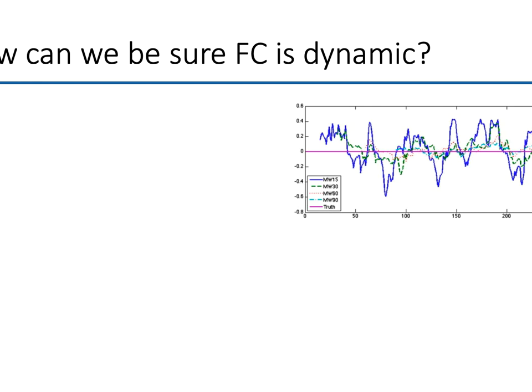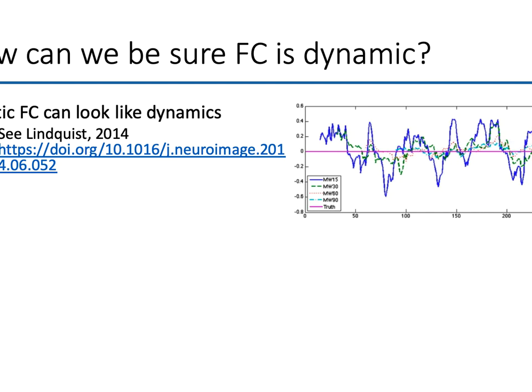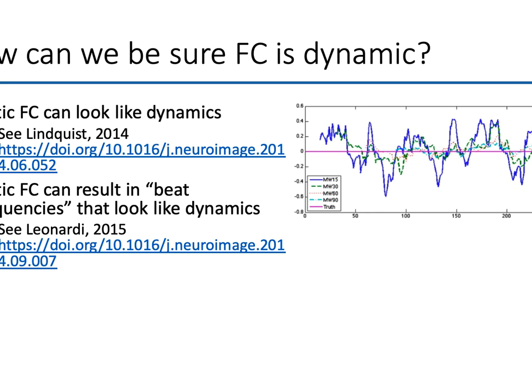Another big controversy: how can we be sure that functional connectivity is dynamic? How do we know it's not just a static thing that looks dynamic because of sampling? This warning was raised by Martin Lindquist, among others. He noted that truly static connectivity can look dynamic if you just pick short windows — by chance, you'll get somewhere it looks high and somewhere it looks low, and it'll change gradually because you're including a lot of the same time points as you smoothly move across the time series. You have to be careful about the statistics you use.